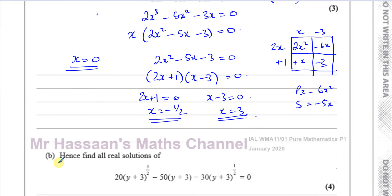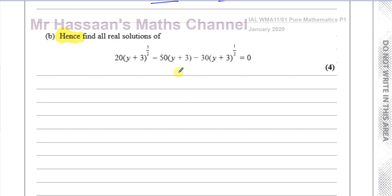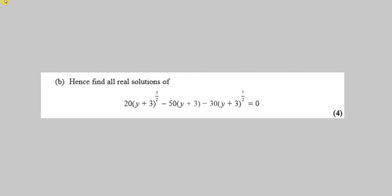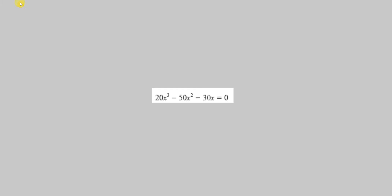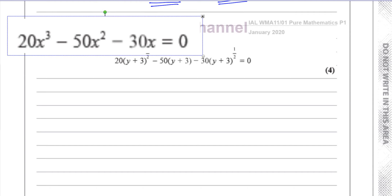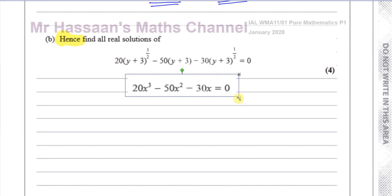Part B says 'hence.' Whenever you see the word 'hence' in a question — and it doesn't even say 'hence or otherwise,' just 'hence' — that means you have to use what you've just found. These words are not there for decoration. You don't just try to solve part B without thinking about part A. The word 'hence' brings your attention to the fact that there is a link between the two parts. Keep looking at the first part and ask: how can I link it to the previous part?